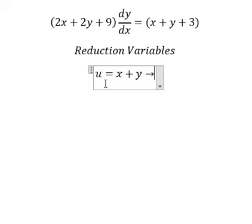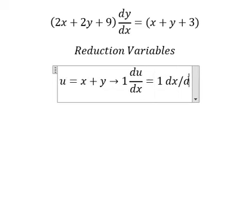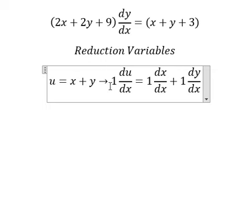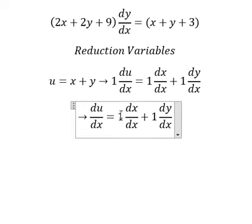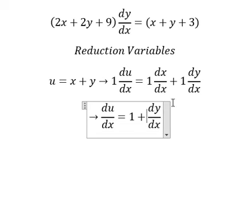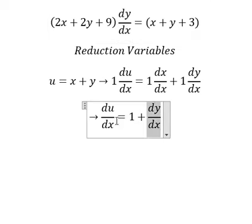Next, we need to take the derivative of both sides. We have dx divided by dx equals 1, and dy over dx. So I will move the 1 to the left side.